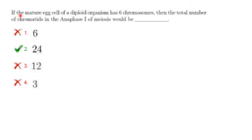If the mature egg cell of a diploid organism has 6 chromosomes, then the total number of chromatids in anaphase 1 of meiosis would be... During prophase and metaphase 1 of meiosis 1, a chromosome consists of a tetrad, that is 4 chromatids or 4 DNA molecules. So here it will be 6 times 4, which is 24.